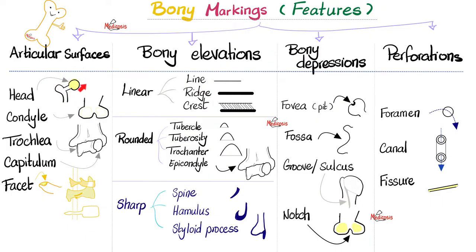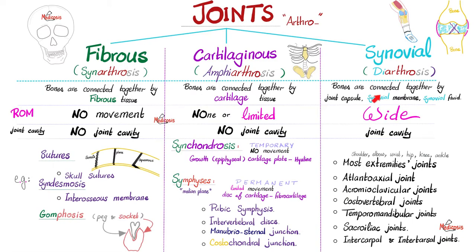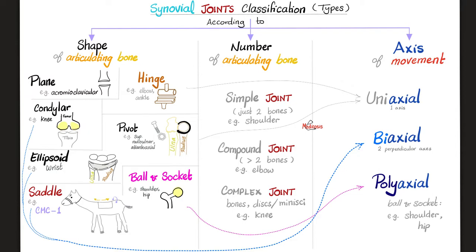The head of one bone meets the socket of the next — this is called the ball and socket joint, such as the hip and shoulder. Let's talk about the different types of synovial joints. You can classify them according to the shape of the articulating bone, the number of articulating bones, and the axis of movement. First: the plane joint — just two flat surfaces, such as the acromioclavicular joint — allows only gliding or sliding movement.